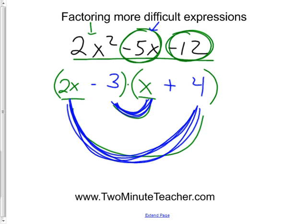Ooh, that can make a 5. Let me double check that. That's positive 8x and negative 3x. That makes positive 5x. That's the exact opposite of what I wanted.